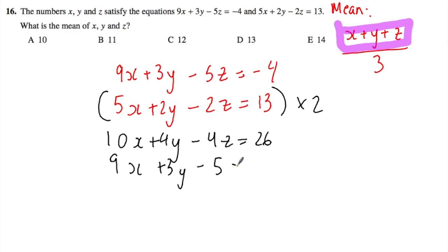I'm going to write the other one below it, the first equation. This is why the UKMT math challenge is tricky - you need to be able to see these kinds of things. If I subtract this equation from the equation above it, I'm going to get 10x - 9x, which is x; 4y - 3y, which is y; and -4z - (-5z), which is z. That's going to equal 26 - (-4), which is 30.